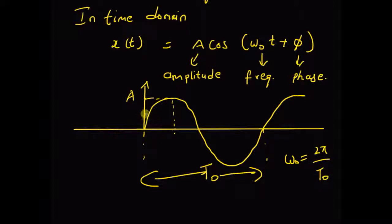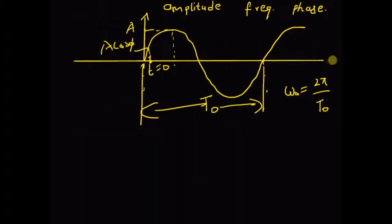At time t equal to zero, the value of the signal is given by A cos phi. So in this case, phi is the initial phase — the phase of the signal. And of course, the x-axis is the time axis.